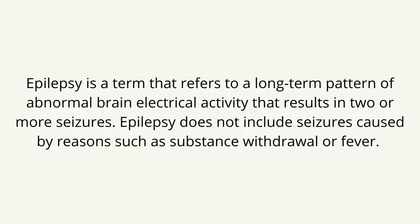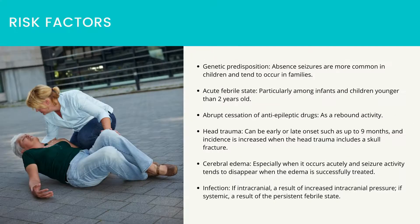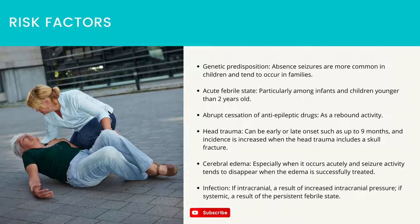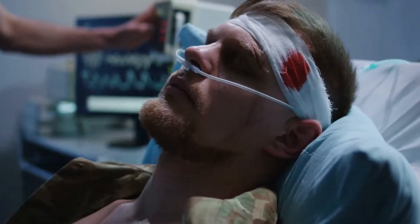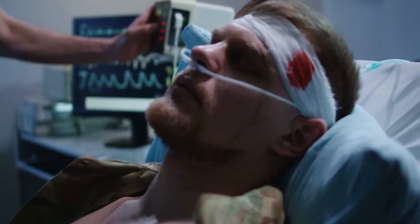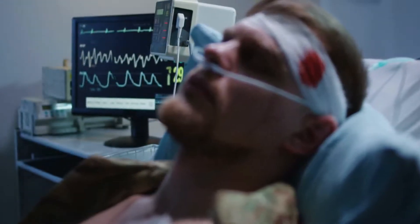Important assessment risk factors include: genetic predisposition — absent seizures are more common in children and tend to occur in families; acute febrile state, particularly among infants and children younger than 2 years old; abrupt cessation of anti-epileptic drugs as a rebound activity; and head trauma, which can be early or late onset such as up to 9 months, with increased incidence when the head trauma includes a skull fracture.